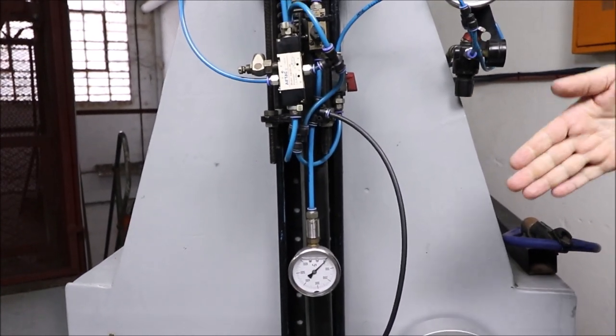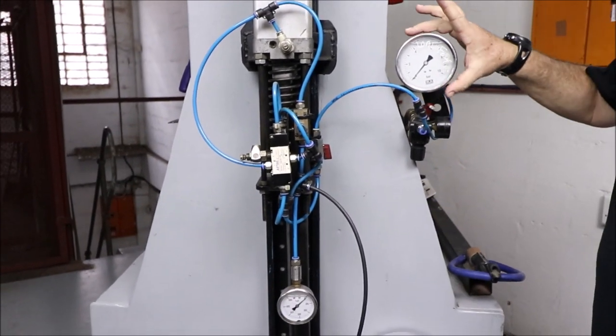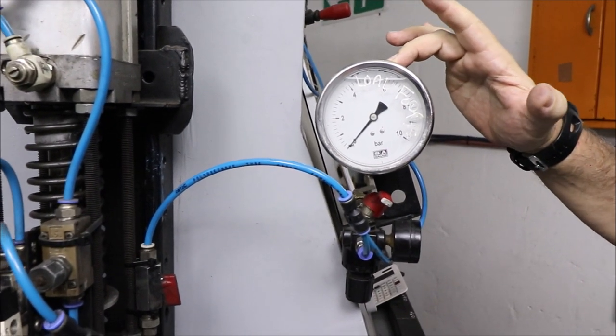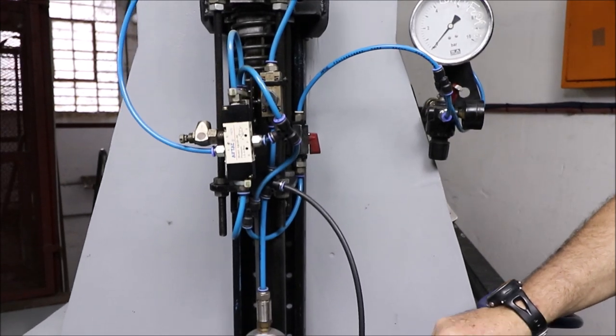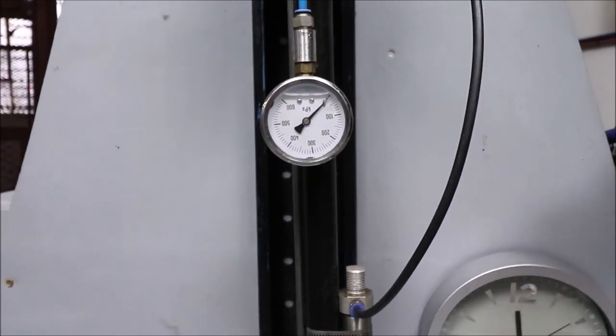We preset the pressure. Once it gets to 120 kilograms, that's shown on this dial in bars. We know how many bars is 120 kilograms. Then it actuates a smaller cylinder that depresses. That cylinder doesn't stop depressing until it fires.